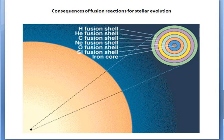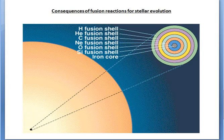The first consequence is that each successive reaction during nucleosynthesis — hydrogen fusion, helium fusion, carbon, neon, oxygen, and so on — has a higher Coulomb barrier due to the higher charge of the nuclei. This means that a higher central temperature is needed for successive reactions to occur, which means that the core has to contract.